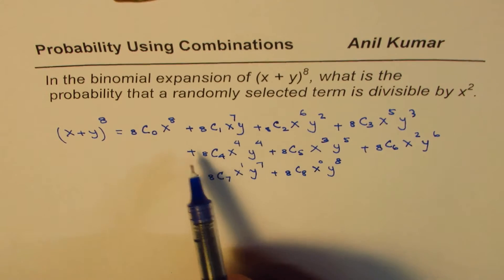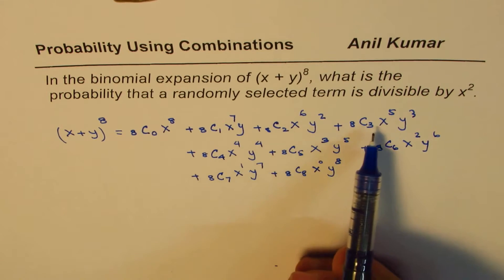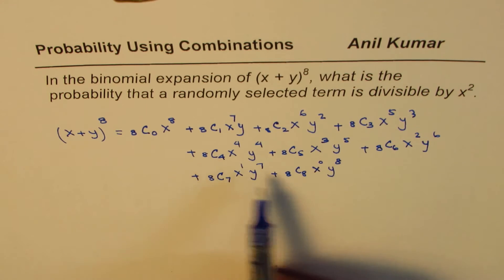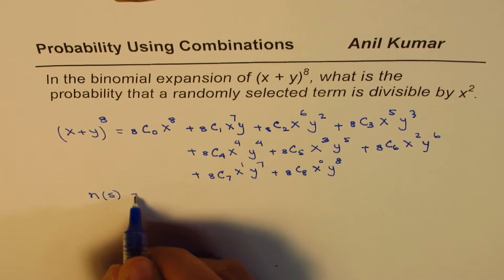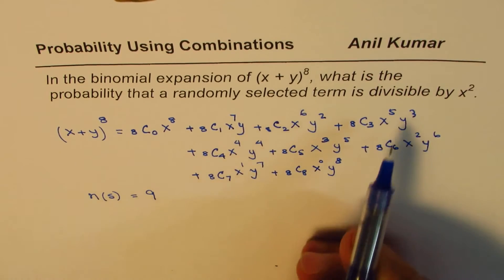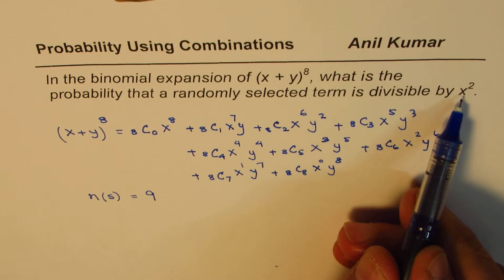So what you see here is that you got 1, 2, 3, 4, 5, 6, 7, 8, 9. So the number of terms in our sample space are 9.